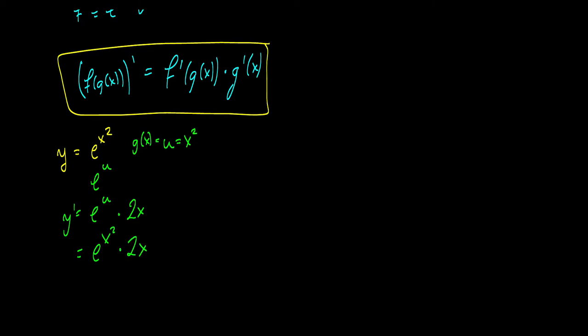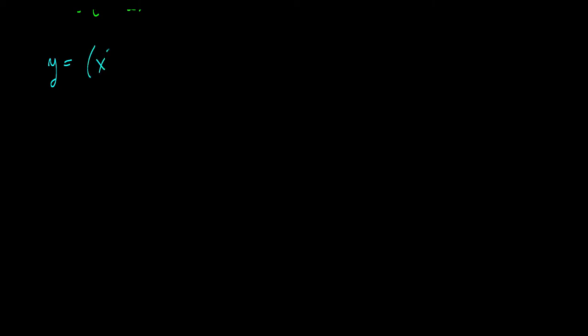Hopefully this made a bit of sense. So g of x is equal to x squared, and f of g of x is equal to e to the x squared. Let's take a look at another problem. I like this question better because the inside-outside functions show really well. We have x squared plus 1 to the one half.